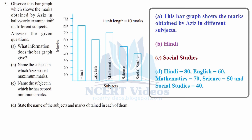Question 3: Observe this bar graph which shows the marks obtained by Aziz in his half-yearly examination in different subjects. In Hindi he secured 80, in English 60, in Mathematics 70, in Science 50, and in Social Studies he secured 40 marks.